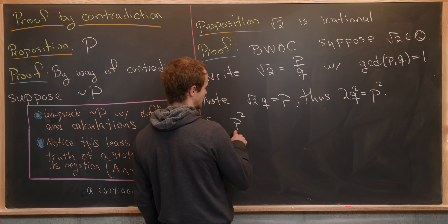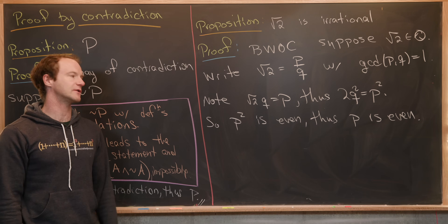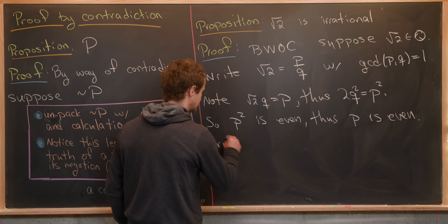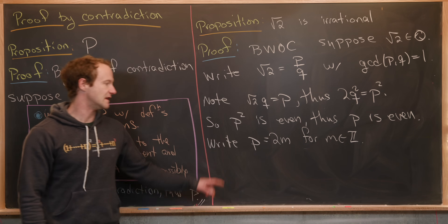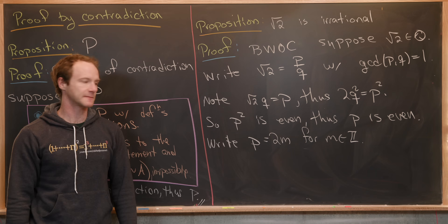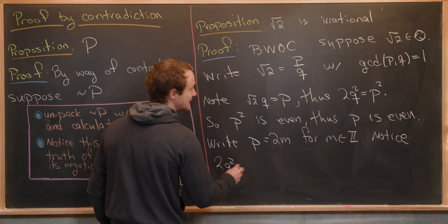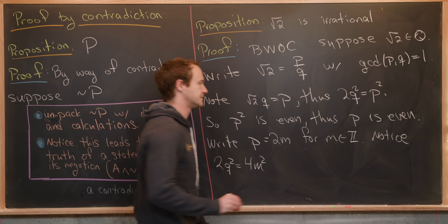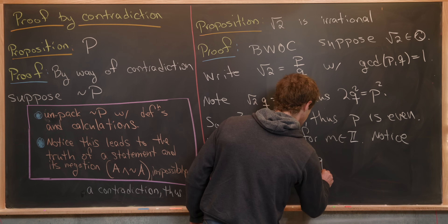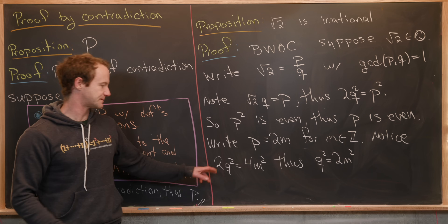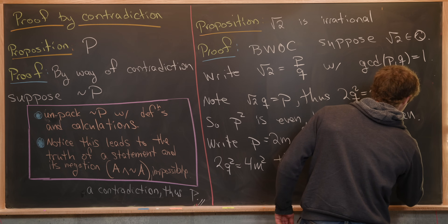So p squared is even, thus p is even. Since p is even, we can write it as a multiple of two: let p equal two times m for some integer m. Plugging this back into the equation, we get two q squared equals four m squared. Thus, q squared equals two m squared — that's just dividing both sides by two. And that means that q is even.